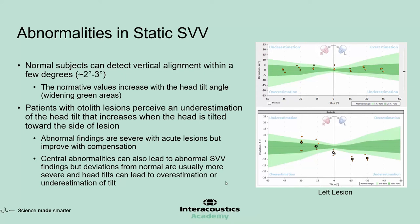Abnormal findings are usually severe in the acute phase of the lesion, but they improve with compensation. Central abnormalities can also result in abnormal SVV findings, but deviations from normal are usually quite a bit more severe, and head tilts can lead to overestimation or underestimation of the tilt.